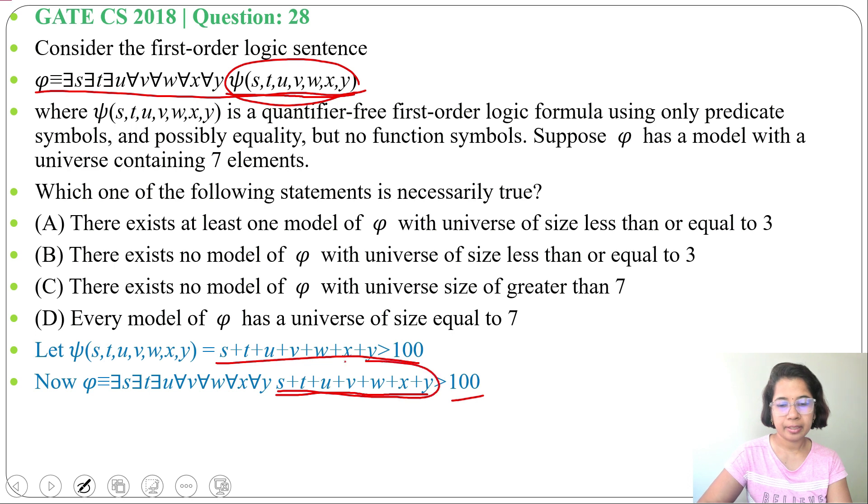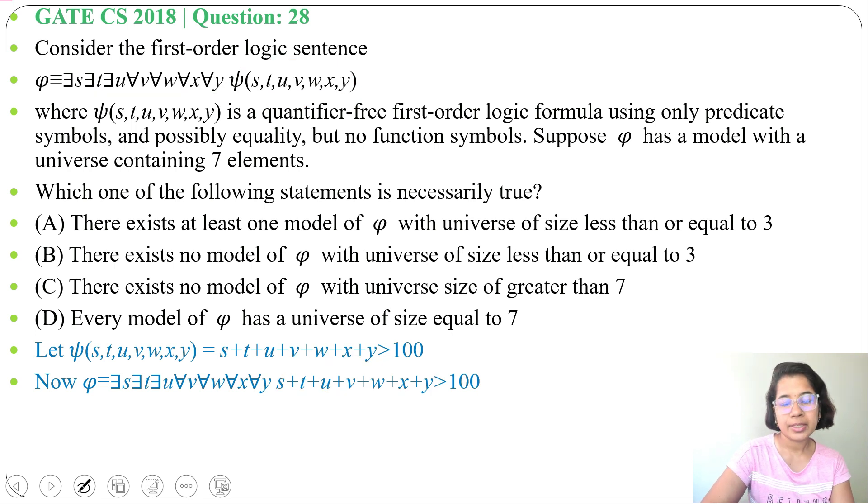These are 7 variables with some variables like s,t,u having existential quantifier added, whereas with v,w,x,y universal quantifier is added. Universal quantifier means for all it should be true; existential means at least for one it should be true, for one or more than one.